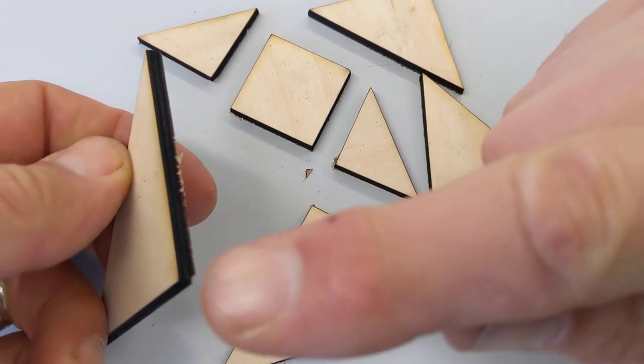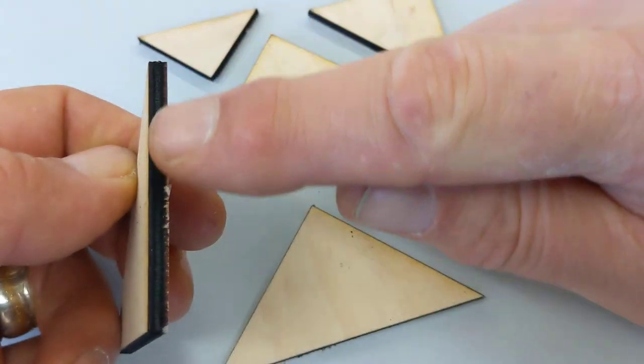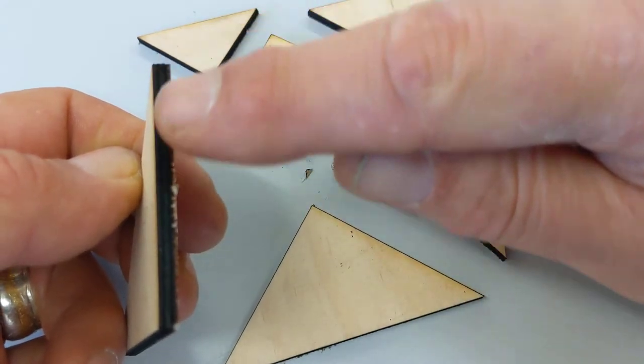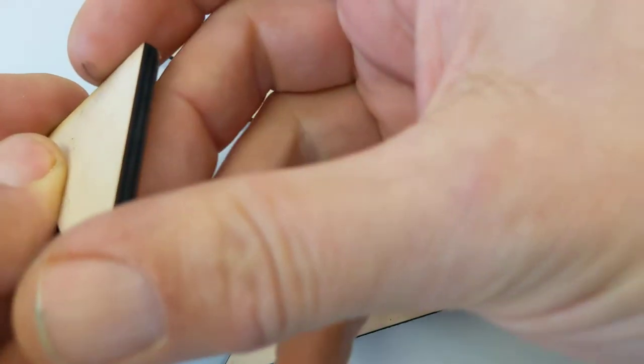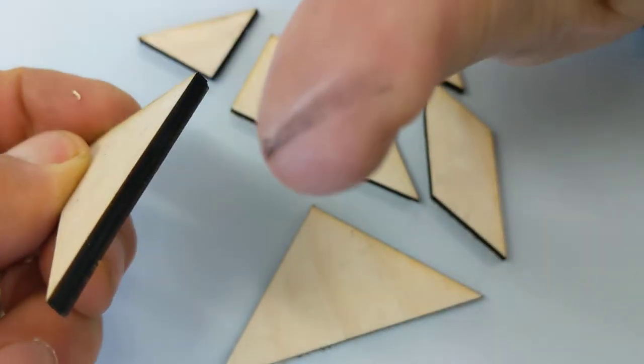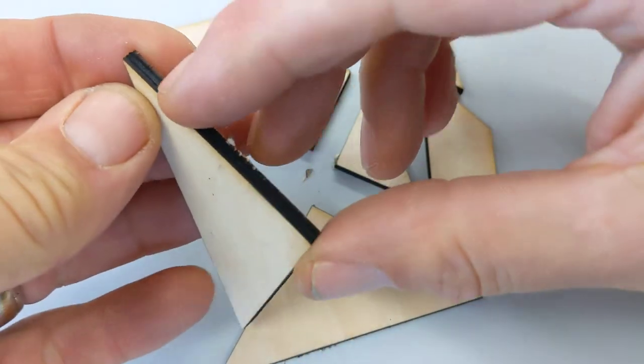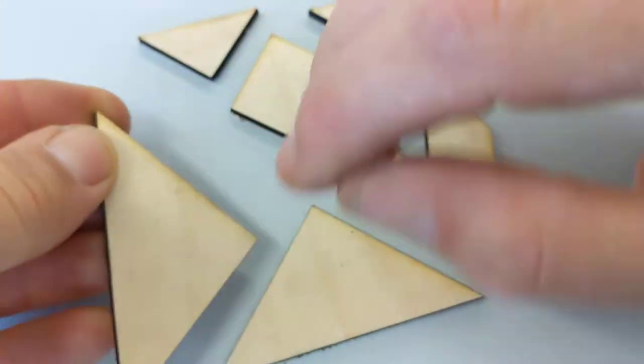Now what I would say to you is when you get it home, if you get some light sandpaper, if you've got any, and just take these edges off, just to tidy them up a little bit, because this sootiness is from the laser cutting and that will get onto your clothes and things like that. So just give it a bit of a clean up.